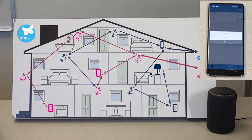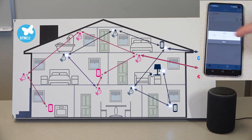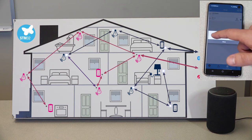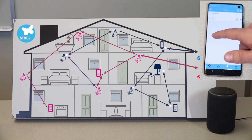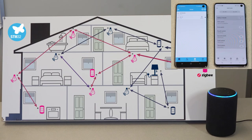Similar to our ZigBee network, the user can control the light on each individual node or can also turn all the lights on or off at once from the app. There is also a BLE-ZigBee bridge node to translate commands between both networks, which I'll activate now.